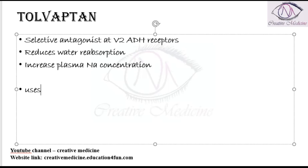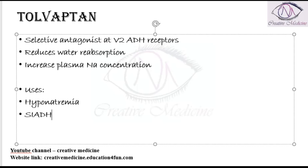The main uses of Tolvaptan are: it is used in hyponatremia and also in SIADH. It is used in hyponatremia because by reducing water absorption it relatively increases the sodium concentration. It does not have any action on sodium excretion, but it mainly excretes water, so relatively it increases the sodium concentration.